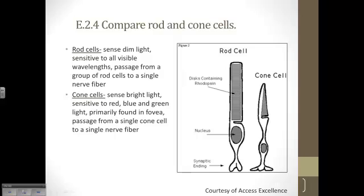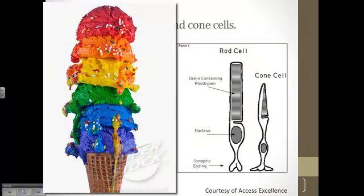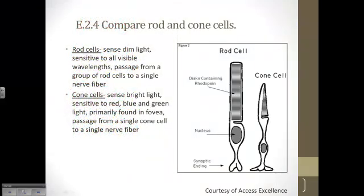Ultimately, the light is going to reach rod and cone cells. And you can see that structurally, morphologically, they look a little bit different. The rod cells detect light and dark, and the cone cells detect color. The way I remember this is I always picture an ice cream cone with a rainbow of ice cream scoops on top. So you have the cone, which has all the color, and then the rod cells, which are focusing more on black and white and dimness and brightness.